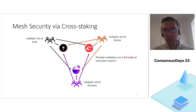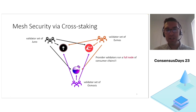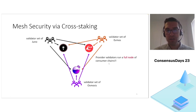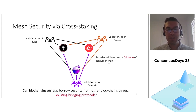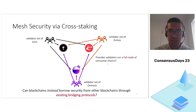This introduces a huge overhead because the provider chain validators must run a full node of the consumer chains when they are validating. As a result in a mesh security architecture where each validator will be validating other chains, they will have to run full nodes of them as well, bringing up the overhead of validating chains considerably. This raises the question whether blockchains can instead borrow security from other chains through existing bridging protocols rather than using validator sets explicitly.